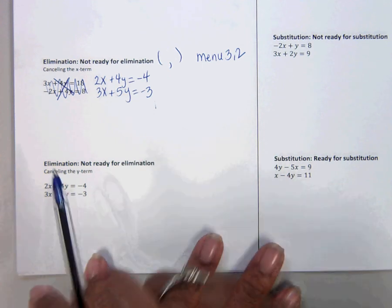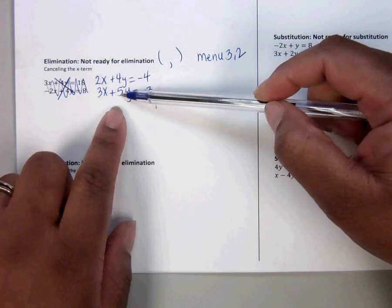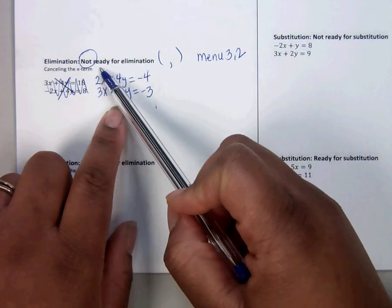Okay, so let's do it. If we try to add, we get 5, and then here we get 9. That's why we say this is not ready for elimination.